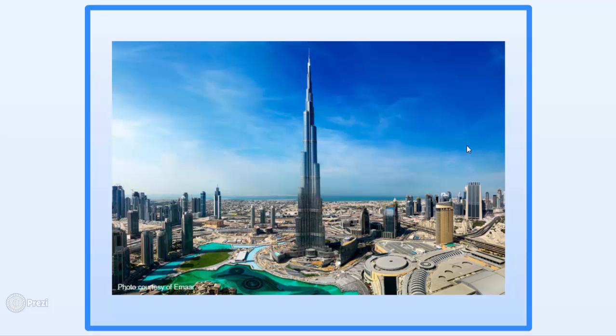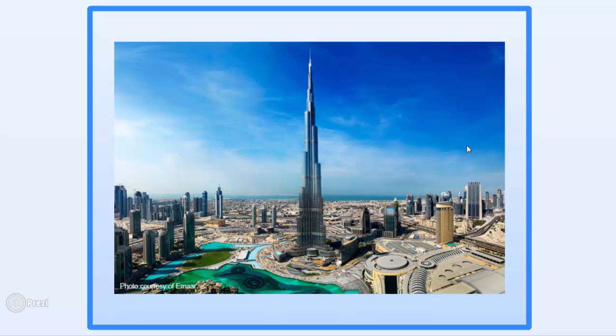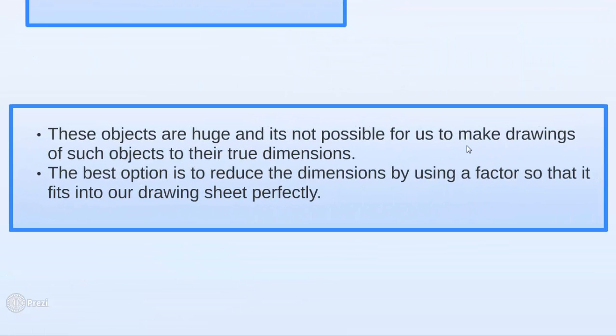Guys, just think about this. Aren't these objects huge? And it's very difficult for us to make drawings of such objects to their true dimensions. The best option that we do have is to reduce the dimensions by using a factor or a quantity. This would ensure that the original dimension is reduced or shrinked to such an extent that it fits into our drawing sheet perfectly.